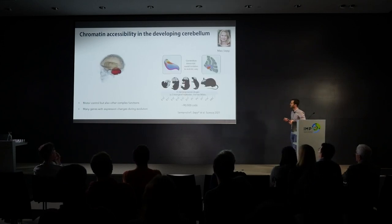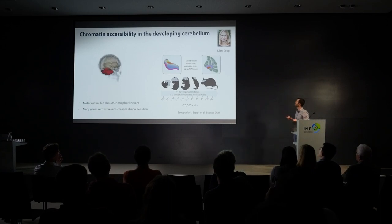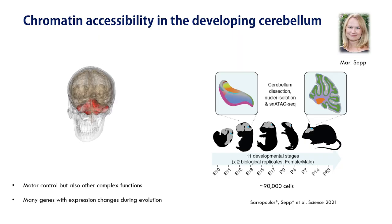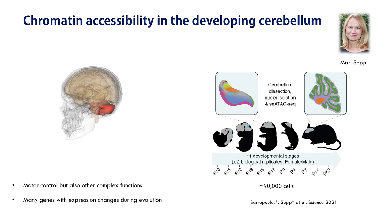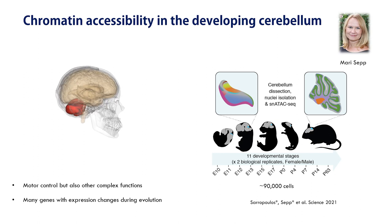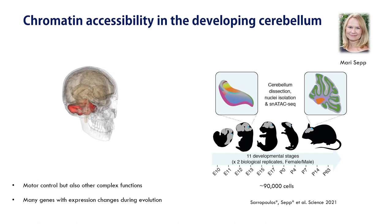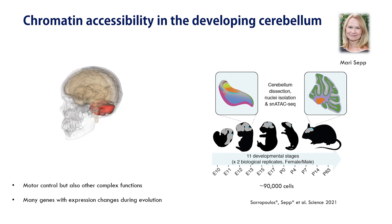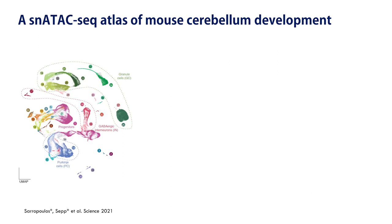We decided to start by studying the mouse. I teamed up with Mari Sepp, a postdoc in the group, and we profiled around 90,000 cells using single-nucleus ATAC-seq across developmental stages — starting from the beginning of neurogenesis on embryonic day 10 all the way to adulthood. The first challenge was to use the data to identify the major cell types present during cerebellum development.